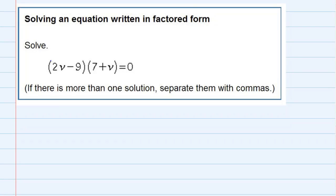Solving an equation written in factored form. We're asked to solve, and since it's already factored, we can see that we actually have two terms being multiplied here, and the result is zero.